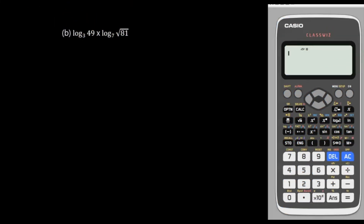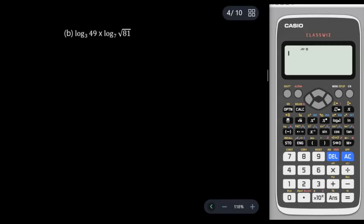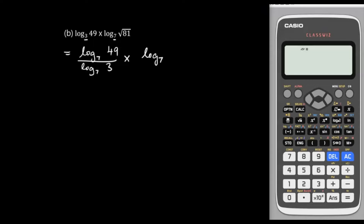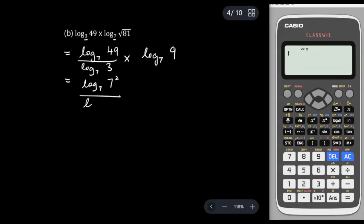Let's look at this question. We see base 3 and base 7. We have 49, and since 49 can be written in base 7, I'm going to change the log to base 7. So log base 7 of 49 over log base 7 of 3, times — and for the second part, the square root of 81 is 9.